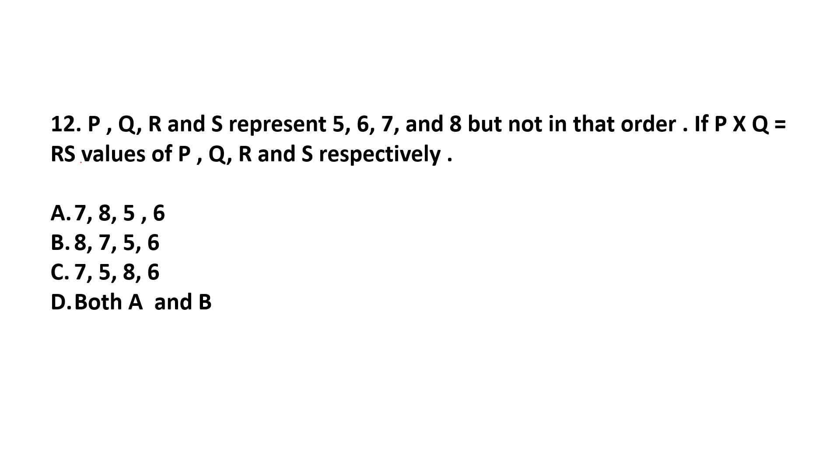Here, it is given that P multiplied by Q... R is at 10's place and S is at 1's place. If we check from the options, the first option, 7 multiplied by 8. 7 is P and Q is 8. And R is 5 and S is 6. So now, 7 multiplied by 8 is 56. This is correct. Answer can be option A.